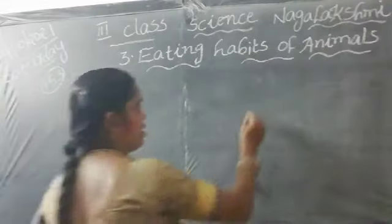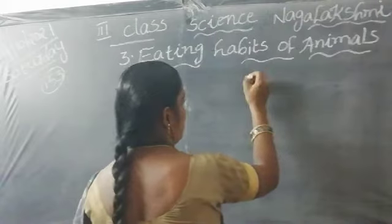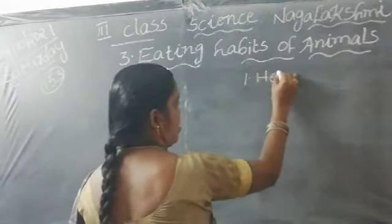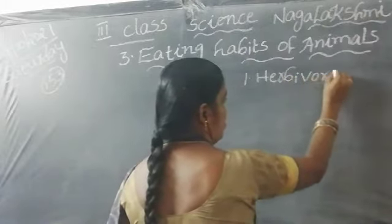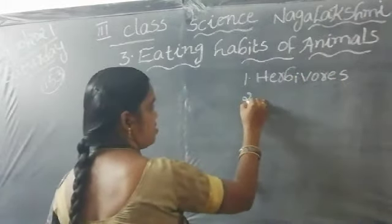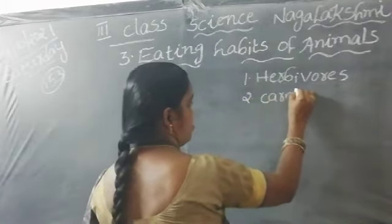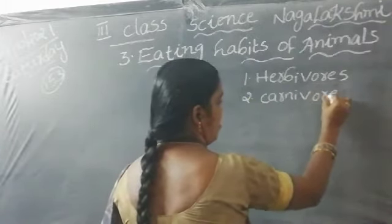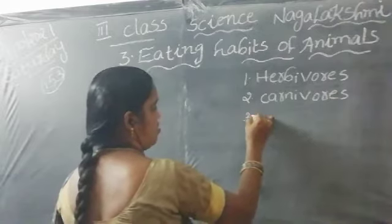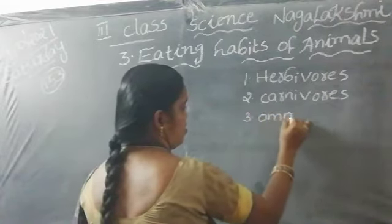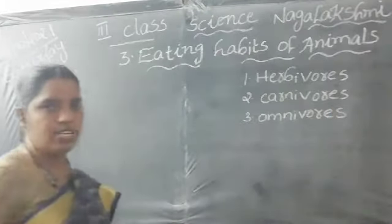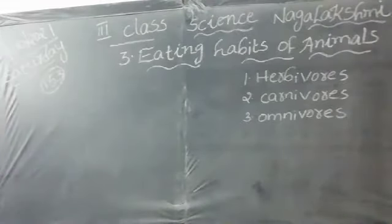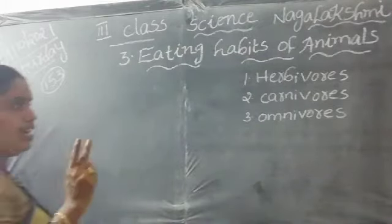The first type is herbivorous, the second is carnivorous, and the third is omnivorous. Depending on their food habits, these animals are divided into three types.